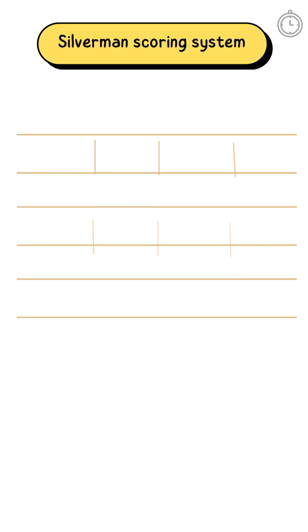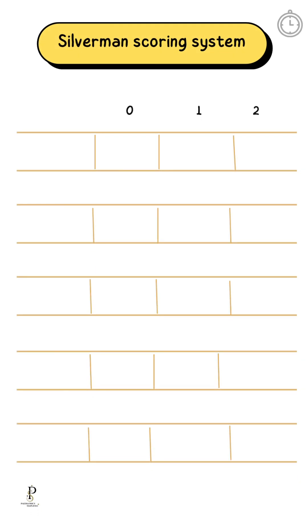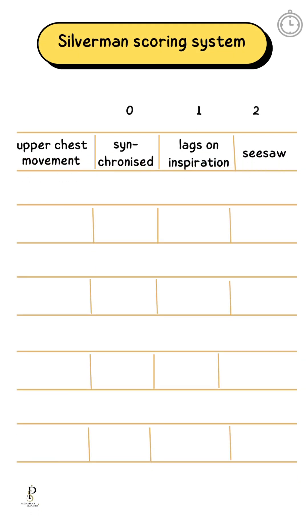The Silverman scoring system for upper chest movement: if it is synchronized, grade 0; lags on inspiration, grade 1; seesaw movement, grade 2.